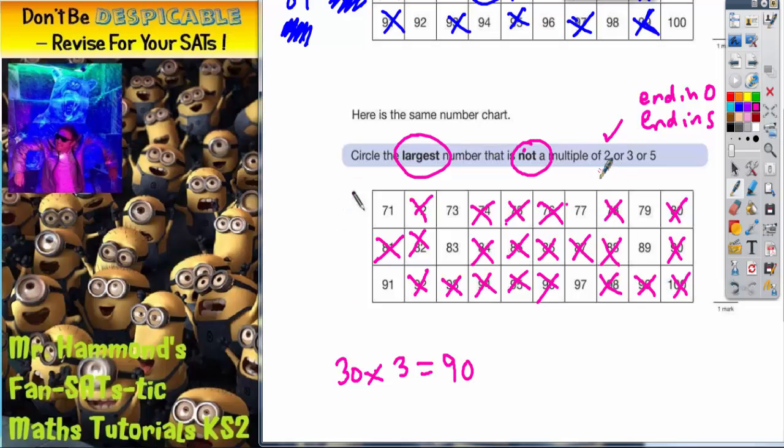So we've eliminated all the multiples of 2, all the multiples of 3, and all the multiples of 5. So circle the largest number that's not any of those. So we've only got to choose from the ones that are left, and we're interested in the largest one. So the largest one is going to be this 97 here. So it's the 97 you need to circle.